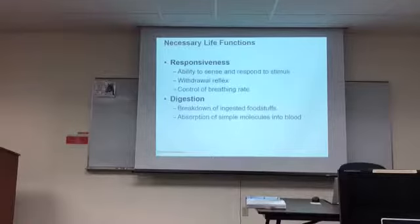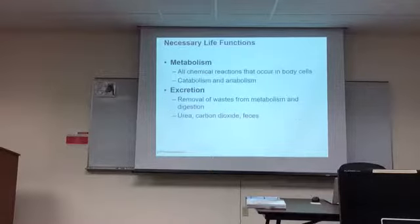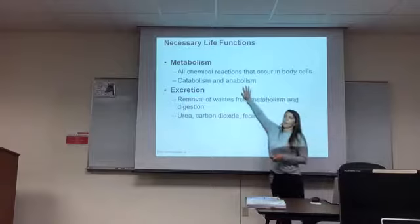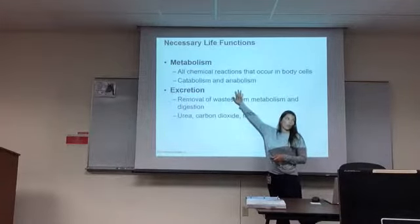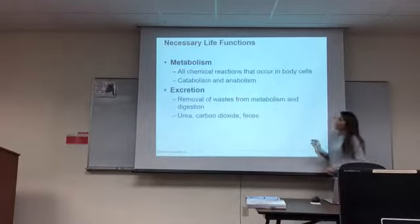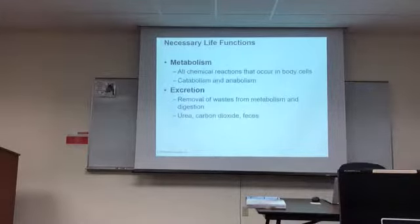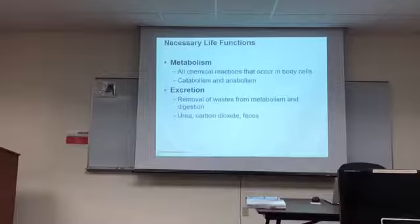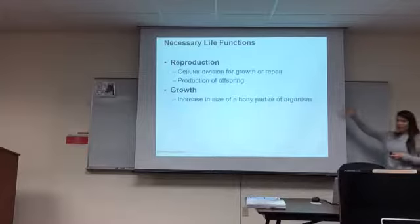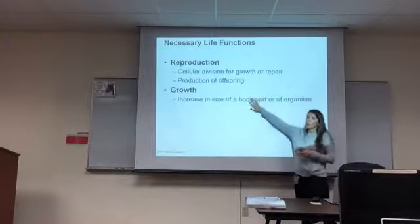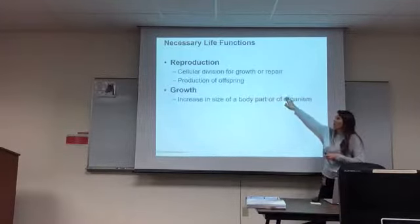Responsiveness is your ability to respond to external stimuli — that's your nervous system. All your reflexes are controlled by the nervous system, including breathing rate. Digestion is taking in and breaking down foods. Metabolism involves catabolism and anabolism — those two terms are super important. Metabolism is the sum of all chemical reactions in your body and they don't necessarily have to include food. Excretion means getting rid of things — sweat, carbon dioxide, feces, and urine. Reproduction at the cellular level is mitosis, and then of course the production of offspring from sperm and eggs.